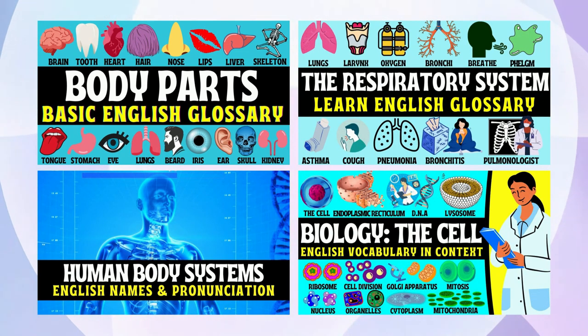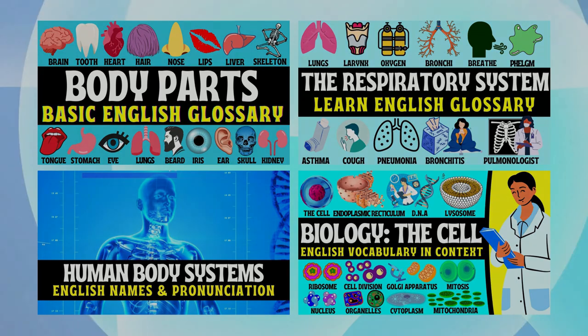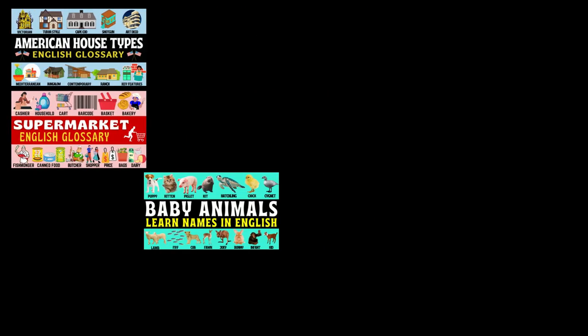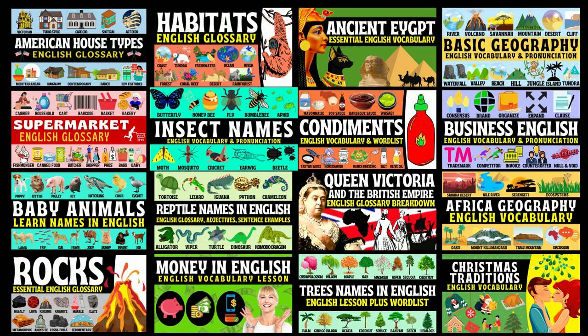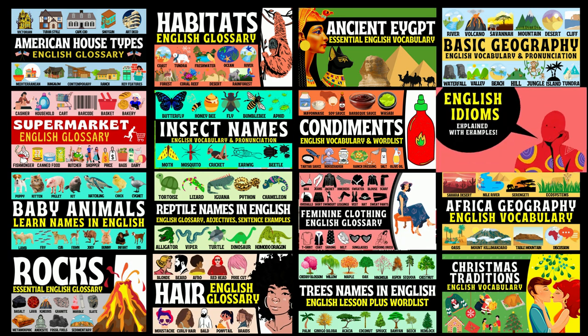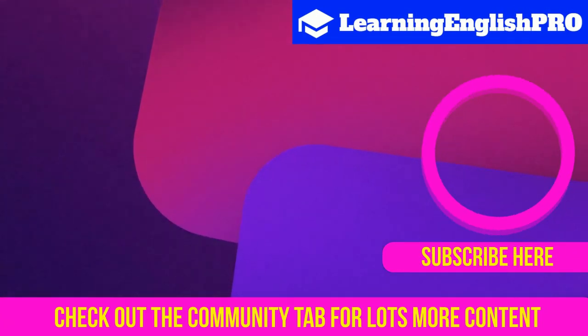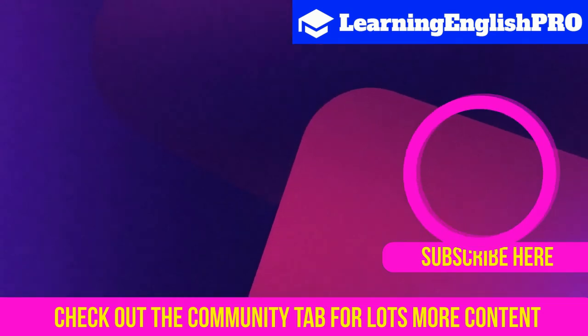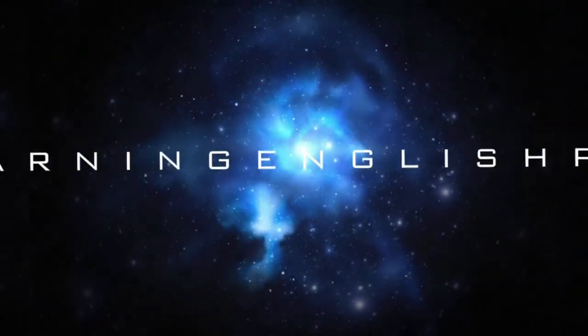For those looking for a more rounded vocabulary on the human body, check out my other videos covering body parts, the respiratory system, human body systems, and a great video on biology covering the cell. Links for these are on screen and in the description below. That brings us to the end of this English lesson on the ear — I hope you enjoyed it. Don't forget to check out the word list in the description and let me know how you got on in the comments. If you're passionate about the English language, you'll love my channel Learning English Pro, jam-packed full of vocabulary lessons on a huge range of topics. Hit subscribe to stay updated on all my latest English lessons. I hope you have a fantastic day — keep learning English like a pro. Thank you.